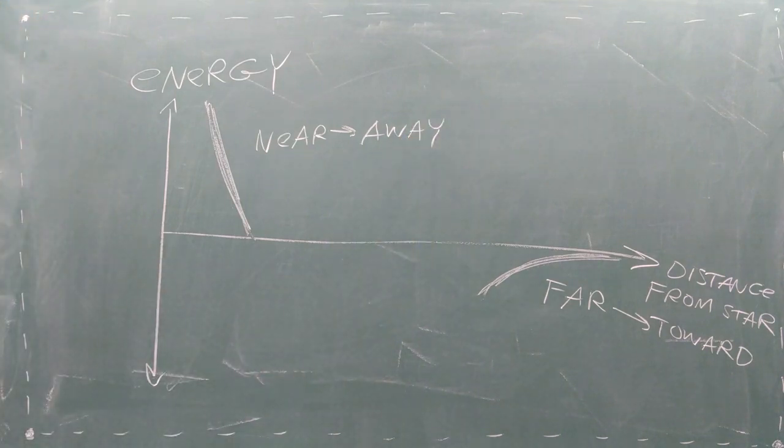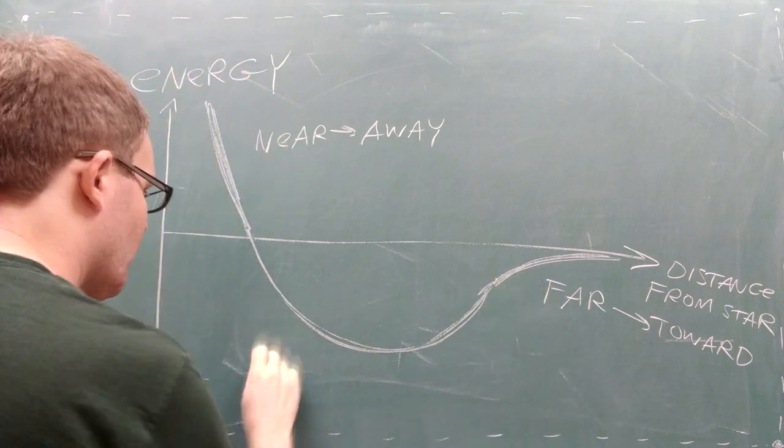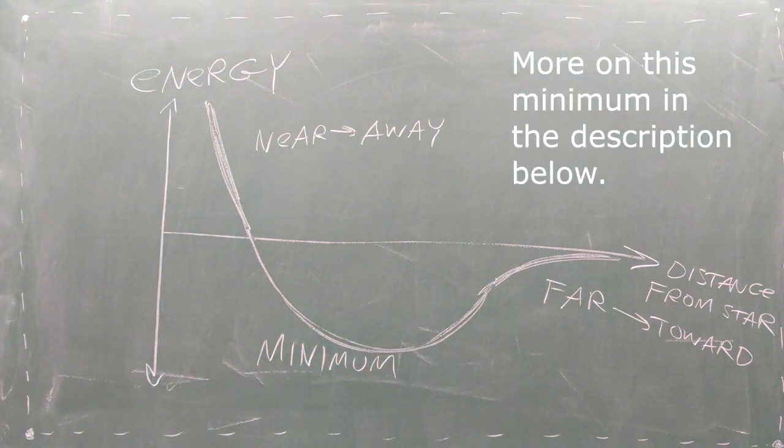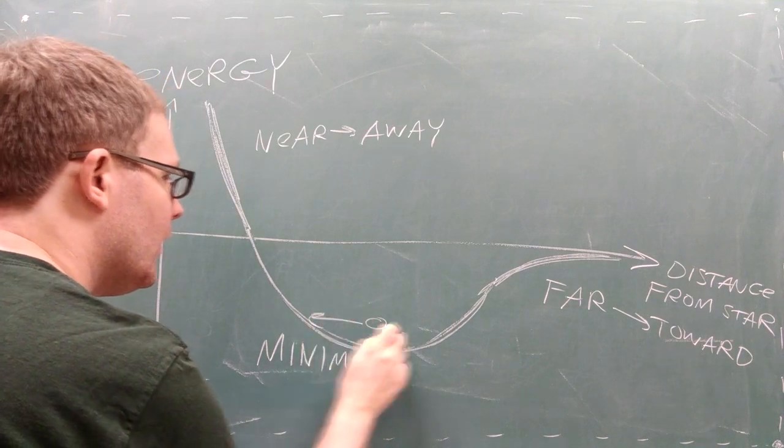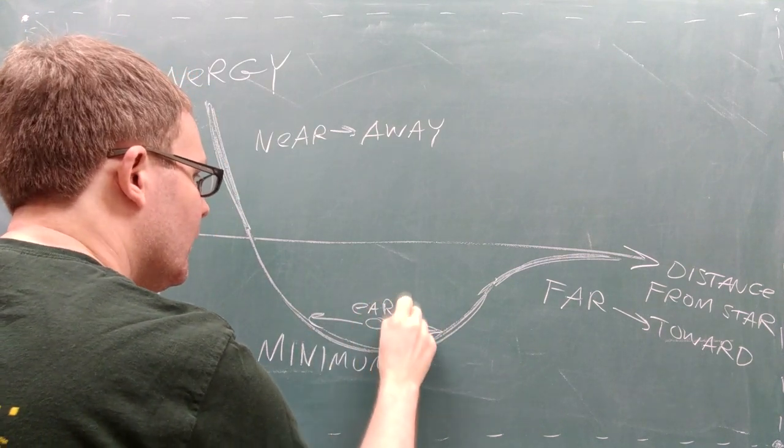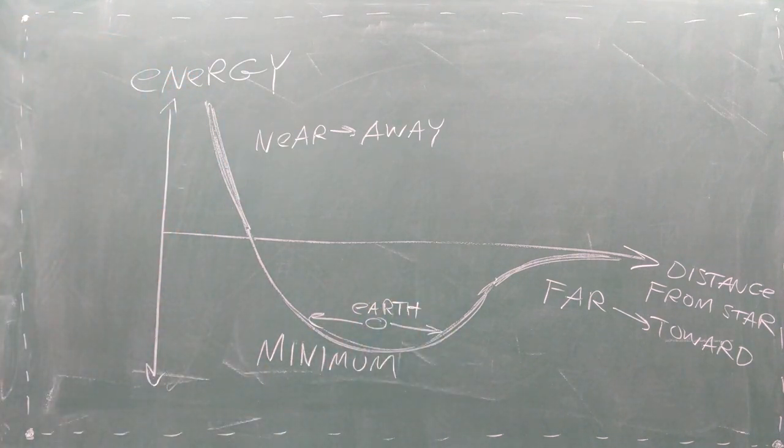While this flinging away isn't really a force, it sure does act like one. The competition of these two influences leads to a minimum in the energy that an orbiting object can have. When an object's energy is near the minimum, its distance from the star can't vary too much, leading to a very circular orbit.